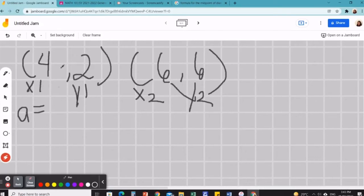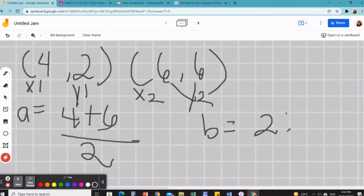Alright, so x sub 1 plus x sub 2, 4 plus 6 over 2. And our b is 2 plus 6 over 2. There, we've got it correct.